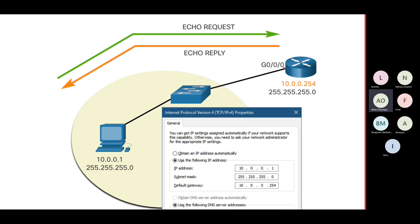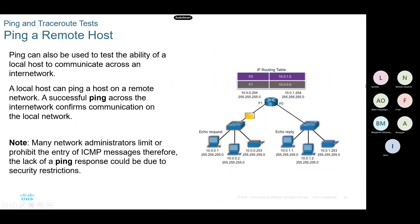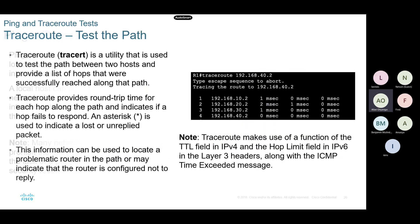By sending echo requests to the router interface and getting echo replies back to your PC, you test if the default gateway is well configured. You can still ping a remote host - I just pinged Facebook servers and Cisco servers, which are far away. Ping can be used to send packets remotely, although some networks don't accept ping messages because firewalls are configured to prevent that.